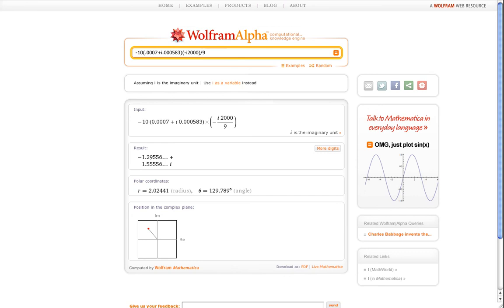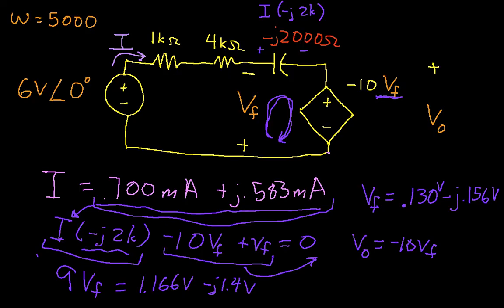So I go back to my picture. And we have then that V0 is equal to 2.02 volts at an angle of 129.8 degrees. And there you have it.